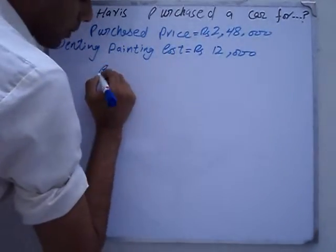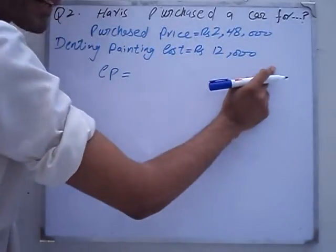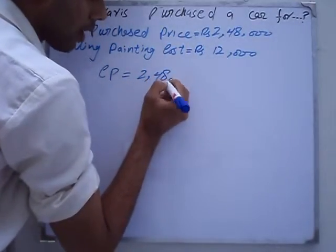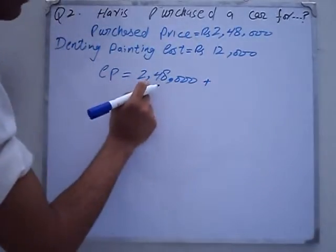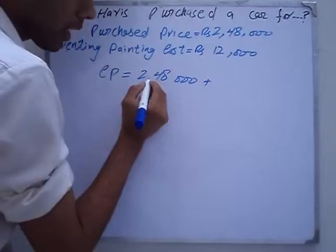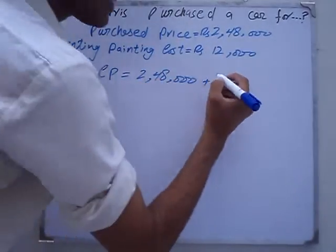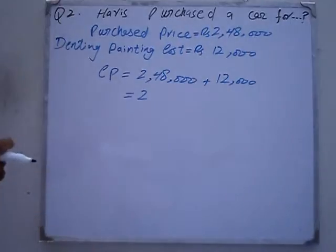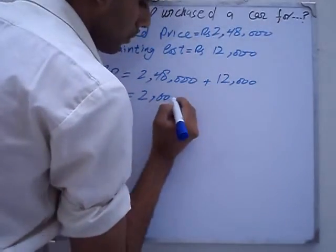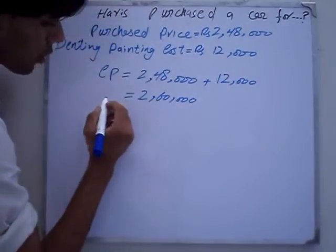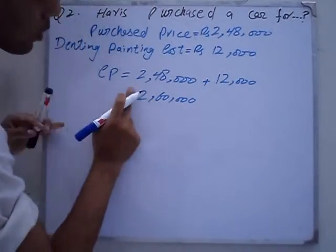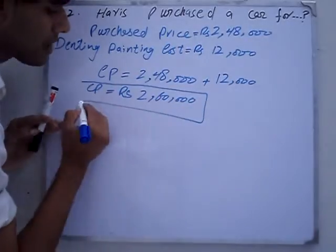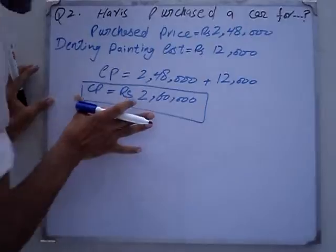Cost price will be the purchase price plus the denting painting cost. CP equals 248,000 plus 12,000 which equals 2,60,000. So the cost price is RS 2,60,000.